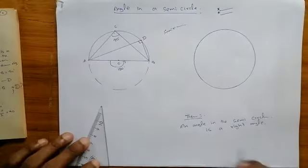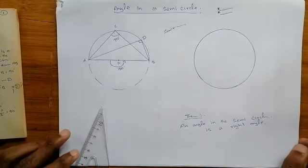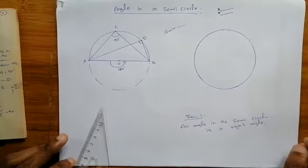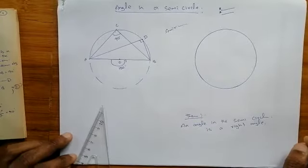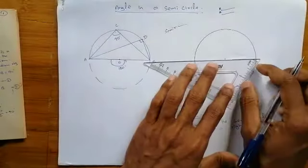Write the theory: angle in the semi-circle is a right angle. We will now go for the formal proof.